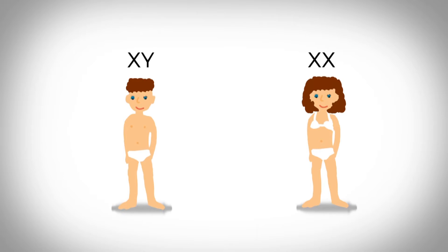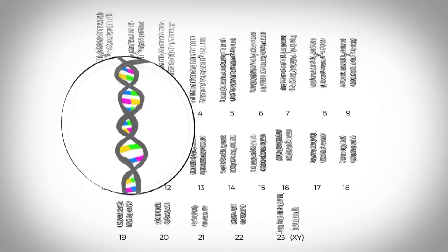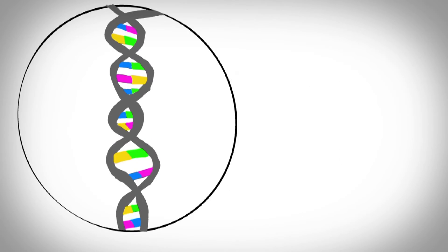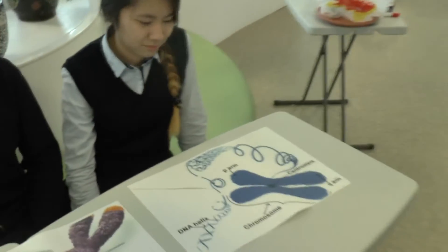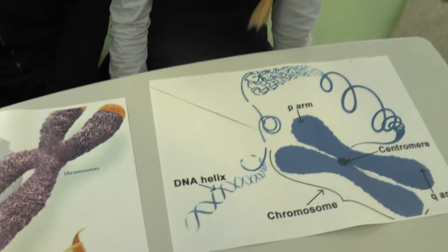Chromosomes are made of DNA and genes are special units of chromosomal DNA. Chromosomes are very long molecules, so they need to be wrapped tightly around proteins.